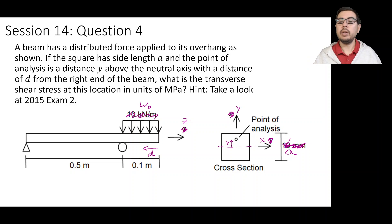For this problem, we are calculating the transverse shear stress at a location given by this dot here. It is a distance y or y' above a neutral axis, and this cross-section is located the distance d from the right end of the overhanging beam.